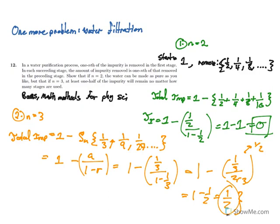To summarize, we talked about how we can represent infinite decimals as geometric series, how to recognize them, how to get their sums, and how to derive the formula for the sums.